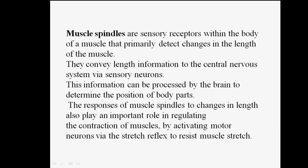Today we will discuss muscle spindles. Muscle spindles are sensory receptors within the body of a muscle that primarily detect changes in the length of the muscle. They convey length information to the central nervous system via sensory neurons. This information can be processed by the brain to determine the position of body parts. The responses of muscle spindles to changes in length also play an important role in regulating the contraction of muscles by activating motor neurons via the stretch reflex to resist muscle stretch.